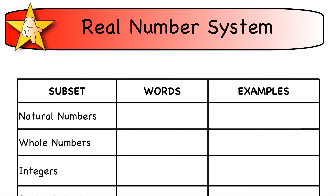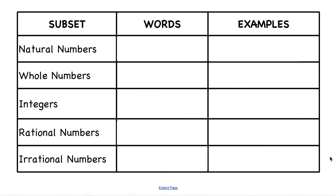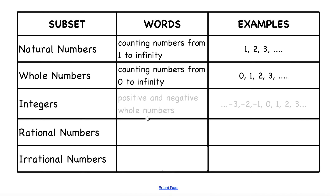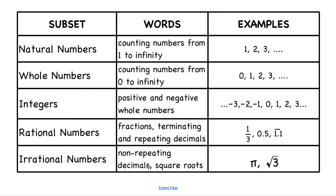So the real number system, as I just explained, has all these subsets: the natural numbers, the whole numbers, the integers, rationals, and irrationals. I provided that as another way for you to visualize or see what each of those subsets are.